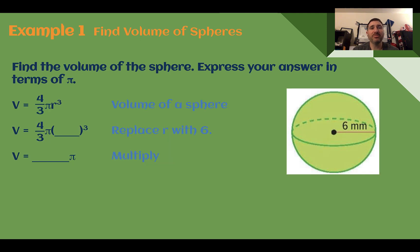Example one, find volume of spheres. Find the volume of the sphere, express your answer in terms of pi. Just like with cones and cylinders, we're going to start with the volume formula. So a sphere is V equals 4 thirds pi r to the third power. Here we just need the radius. Looking at the picture from the center to the outside, we have a radius of 6. So let's replace r with 6.